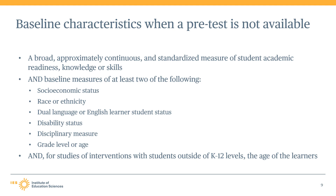Along with the baseline measure, the study also would need to report baseline information for at least two of the following characteristics of the sample: socioeconomic status, race or ethnicity, dual language or English learner status, disability status, disciplinary measures, grade level and age. And for studies of interventions implemented for students younger than kindergarten, or for adult education programs, the age of the learners.